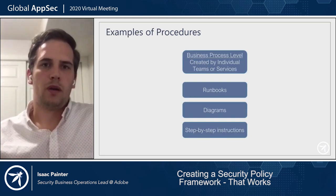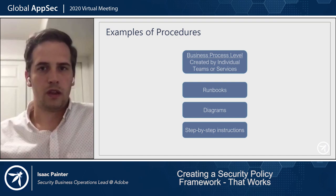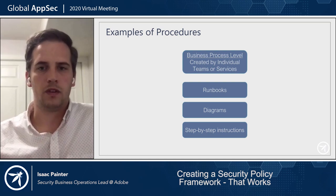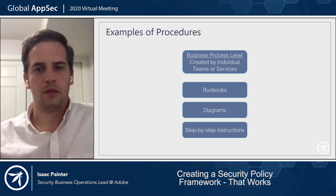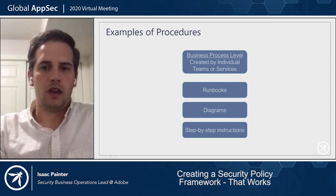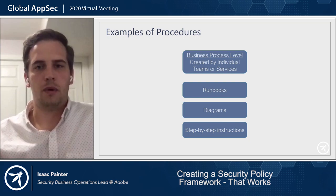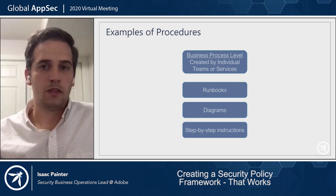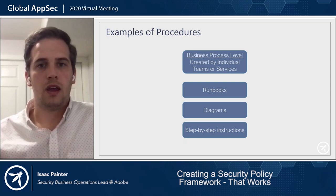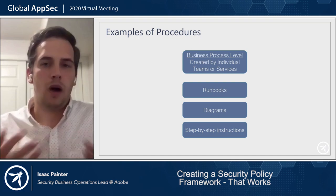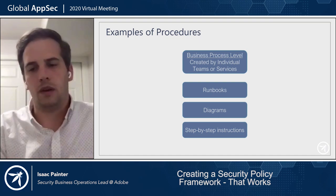Procedures are a governing document but don't scale across the entire business — they operate at the business process level and are created by individual teams and services. They can be runbooks, diagrams, or step-by-step instructions. They're made available to whoever needs them and maintained by those individual teams, but they don't require the company-wide subscription that policies and standards do.